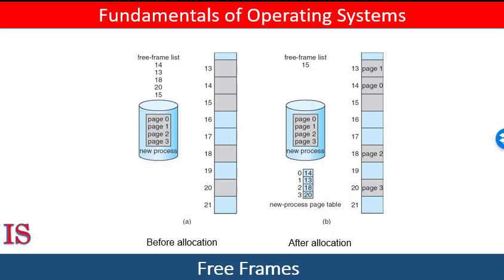Each page of the process needs one frame. Therefore, if the process requires n pages, then at least n frames must be available in memory. If that n number of frames are available, they are allocated to this arriving process. This allocation scheme still requires us to load the entire job in memory before we start.